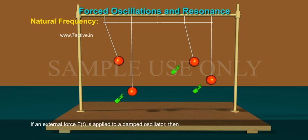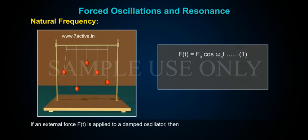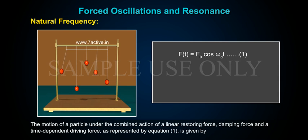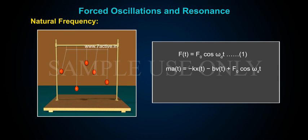If an external force F(t) is applied to a damped oscillator, then F(t) = F₀ cos(ωd·t) — equation one — where F₀ is the amplitude of the external force and ωd is the driven frequency. The motion of a particle under the combined action of a linear restoring force, damping force, and time-dependent driving force is given by: ma(t) = −kx(t) − bv(t) + F₀ cos(ωd·t).